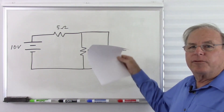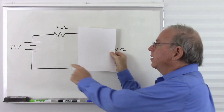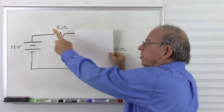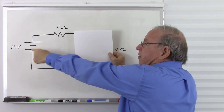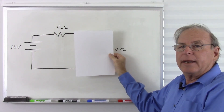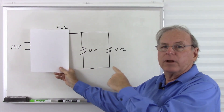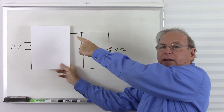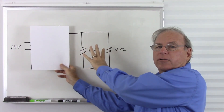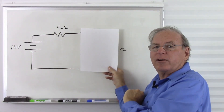If we obscure part of the circuit, we see that the other part looks like a series circuit — a battery and a resistor — with only one possible current path. Now if we obscure the other part of the circuit, we see what looks like a parallel circuit: a node and two current paths. So this part is in parallel, and this part is in series.